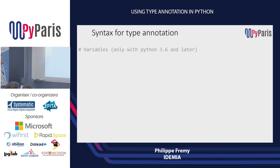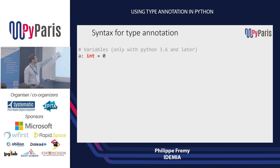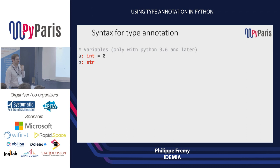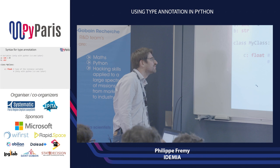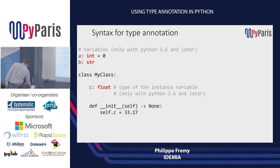You can also annotate variables — that's only available from Python 3.6. The syntax is very similar and straightforward. Python tries to remain consistent: variable name, colon, the type, equals the value. You can even provide just a bare annotation without assigning a value. When using classes, it's possible to declare the type of instance variables. For example, you can say that 'self.c' will be a floating point. You can also declare the type immediately when initializing your class.